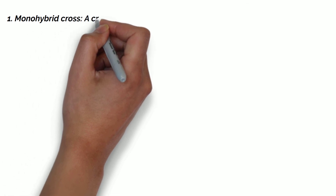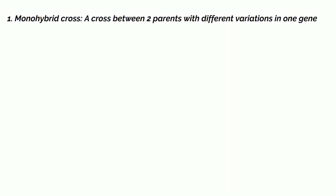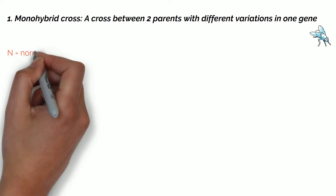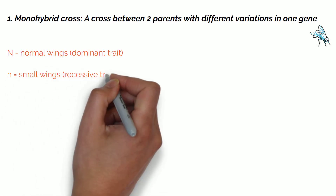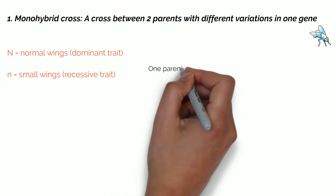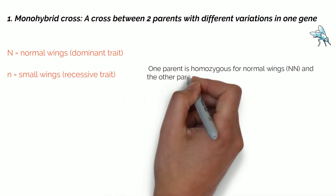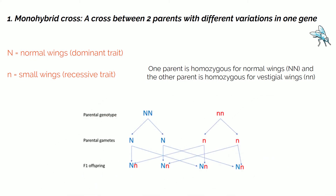A monohybrid cross is a cross between two parents with different variation in one gene. For example, in fruit flies, let's look at the inheritance of wing length. Normal wings are denoted by the capital letter N, so this is a dominant trait. Vestigial, or small wings, are denoted by lowercase n, so this is a recessive trait. One parent is homozygous for normal wings (NN) and the other parent is homozygous for vestigial wings (nn).